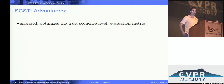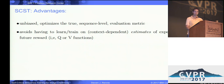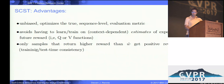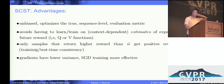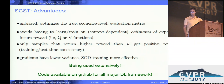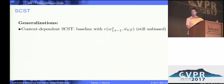There are several advantages. The technique remains unbiased and it optimizes the true sequence-level evaluation metric you're interested in. It avoids having to learn or train estimates of expected future reward. And as I mentioned, only rewards higher than those obtained by the current test-time algorithm output contribute a net positive result. The gradients have lower variance and SGD training becomes more effective. It's being used extensively — you can just Google it. The code is available on GitHub already in pretty much every major deep learning framework.